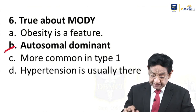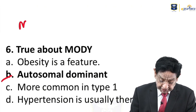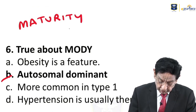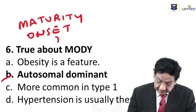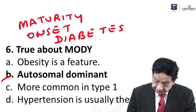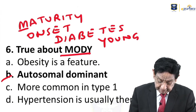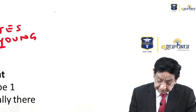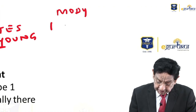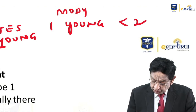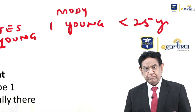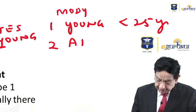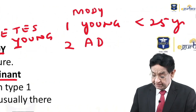Question 6: MODY — Maturity Onset Diabetes of the Young — is autosomal dominant. Basic concept: MODY is classically seen in young people, usually below 25 years. Being autosomal dominant, there will be a definite positive family history in these cases.